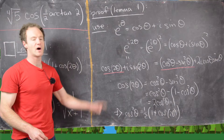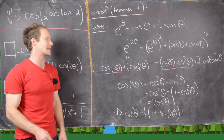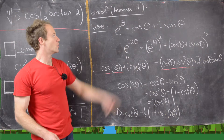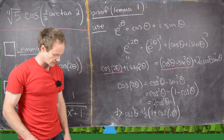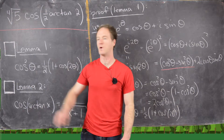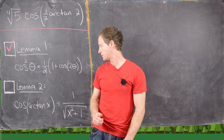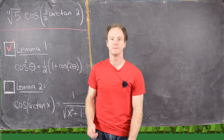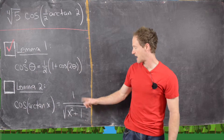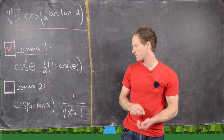That's the end of the proof of Lemma 1. I want to point out that we can get lots of trigonometric identities by working with Euler's formula. Now we're ready to move on to the proof of Lemma 2, which says that cosine of arctan x equals one over the square root of x squared plus one.